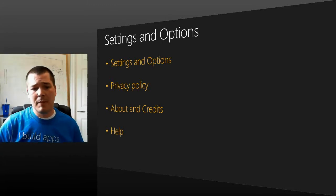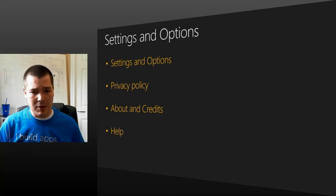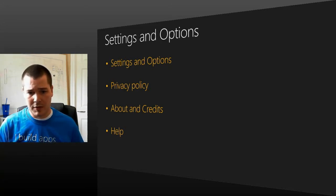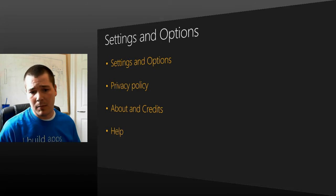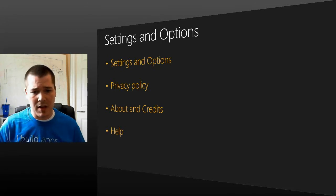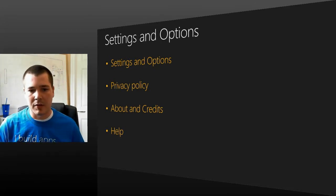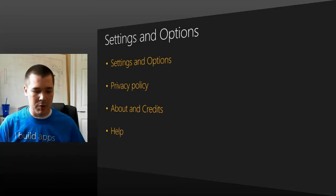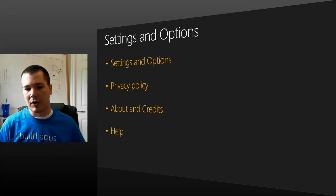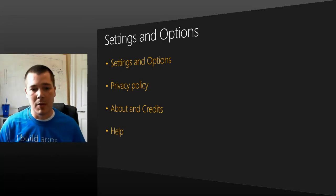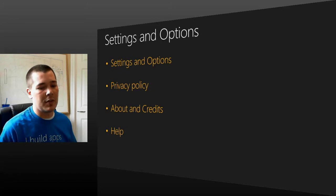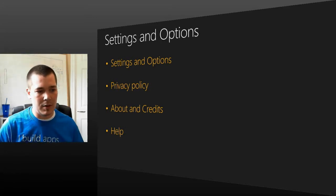If your game includes gameplay training or help — like a tutorial — this might be a good place to put that information in your settings charm. Alternatively, you could make tutorials available as part of your gameplay, which a lot of games are doing now. But it's always nice to be able to go to the settings charm and look up tutorials on how to use certain features of the game.